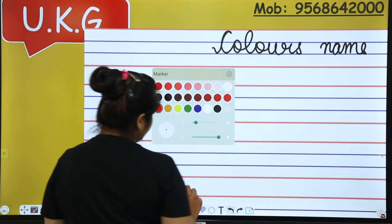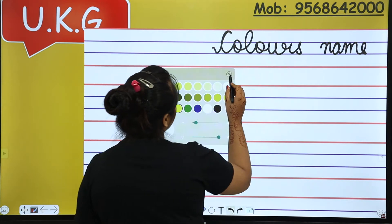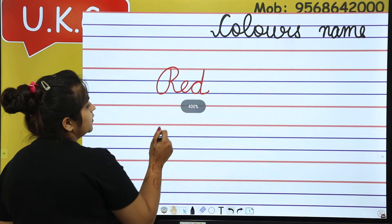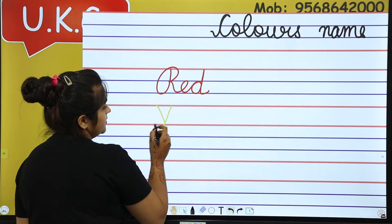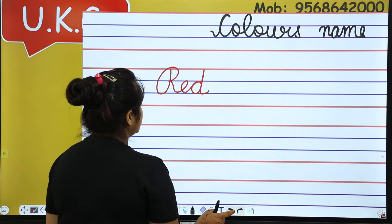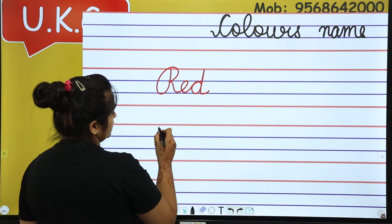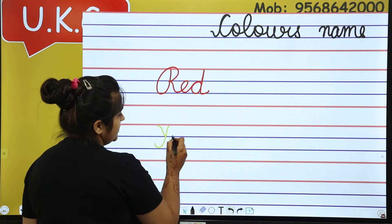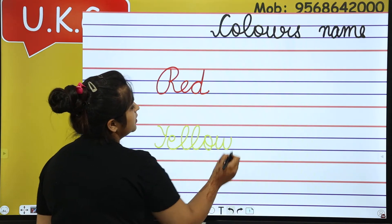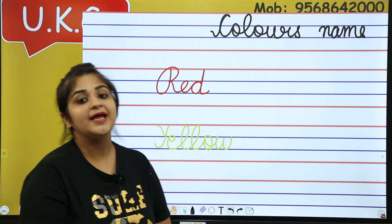Next color I will take yellow. And the spelling for yellow is Y... now it will be visible, let's try that it is visible okay. Y-E-L-L-O-W, yellow.